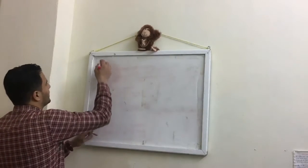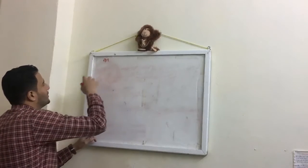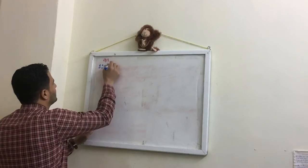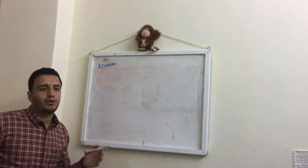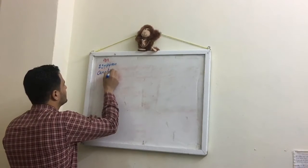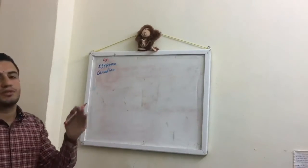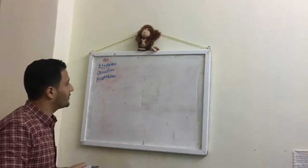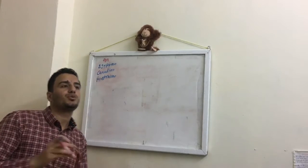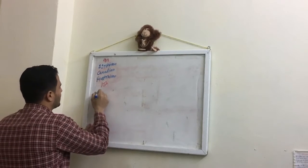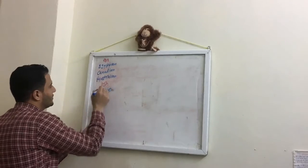Now let's take a look at some nationalities. Some nationalities end with -an: Egypt → Egyptian, Canada → Canadian, Australia → Australian, and so on.